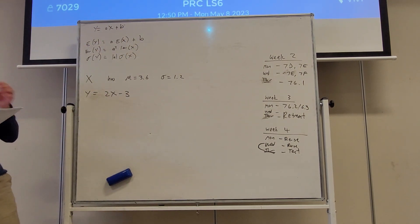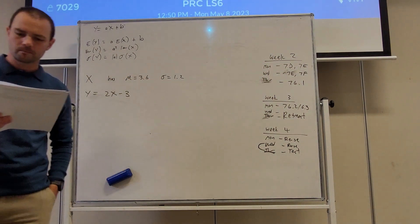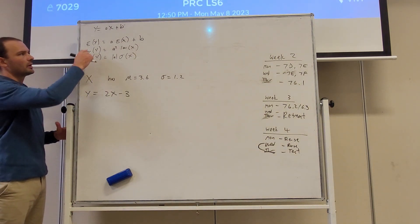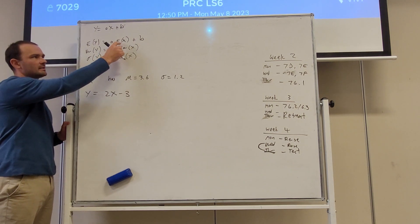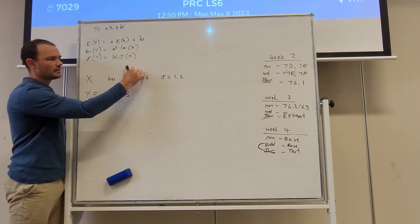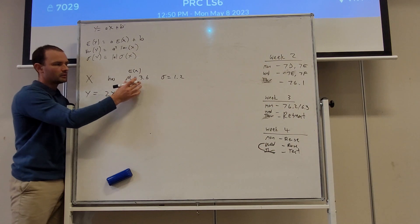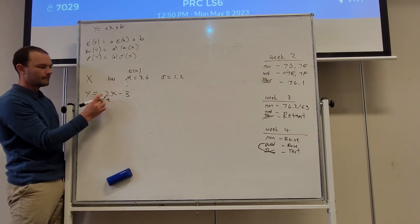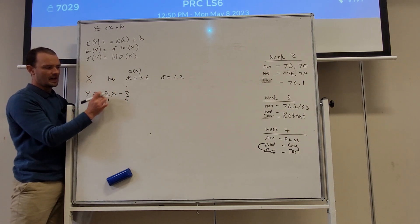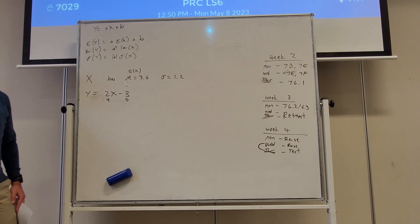So we're going to start with this one here. We've got x as a random variable, has a mean of 3.6 and a standard deviation of 1.2. Find E(y). So E(y) is equal to a times E(x) plus b. This is our mean, this is our E(x). Mean and E(x) mean the same thing, the expected value. This here is our a value, and this here is our b value. y is ax plus b.